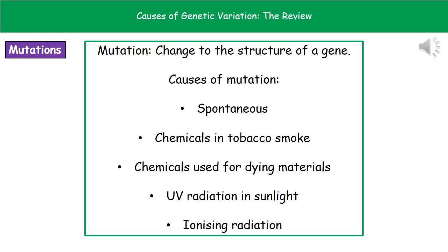If we consider mutation first, whenever we're talking about a mutation, we're referring to the change of the structure of a gene. There are a variety of different causes of mutation. Some occur spontaneously — they don't need any other influence and just occur within our cells. Exposure to chemicals in tobacco smoke or chemicals used for dyeing materials can lead to mutations, as can UV radiation from sunlight and ionizing radiation like x-rays and gamma rays, which can lead to a higher degree of mutation.